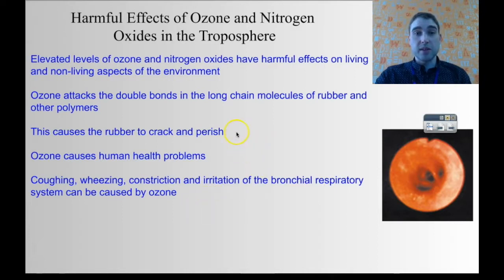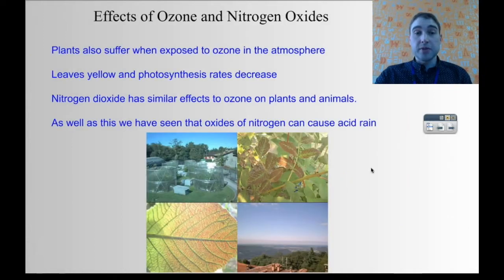Also on non-living things, because they're quite reactive, they could cause rubber to crack or perish. You can break down plastics as well, so they're not good for the built environment as well as for living things. Plants can also suffer when they're exposed to ozone in the atmosphere. You get yellowing of leaves, and whenever you damage leaves you get photosynthesis rates decreasing.